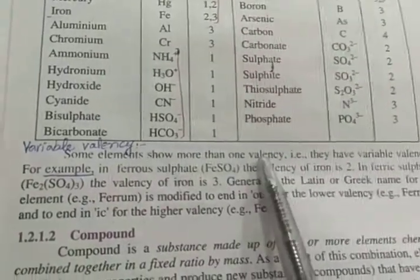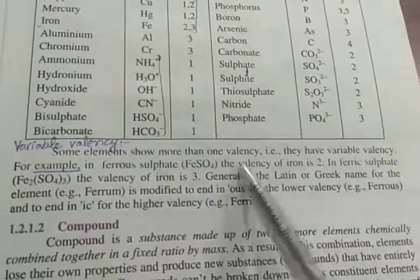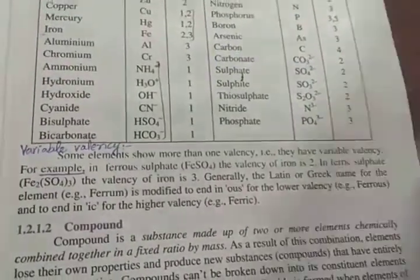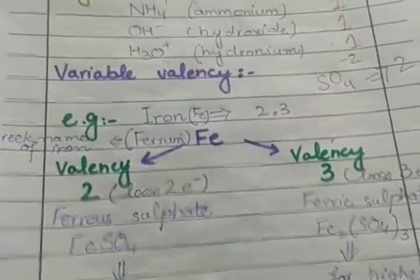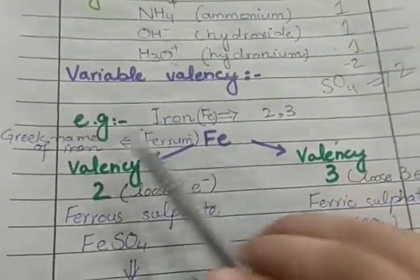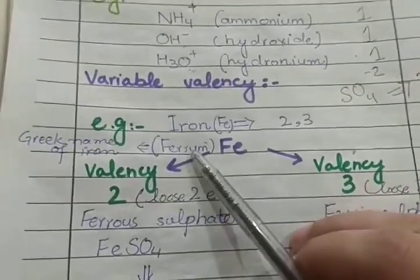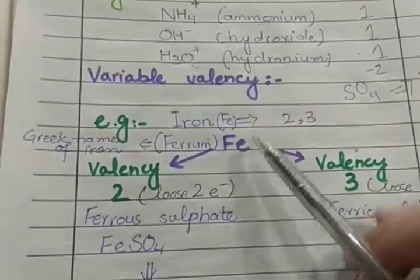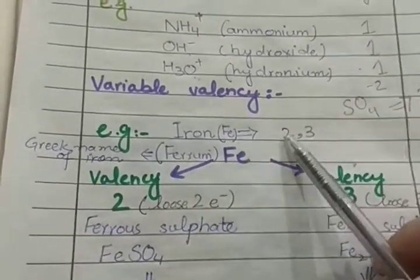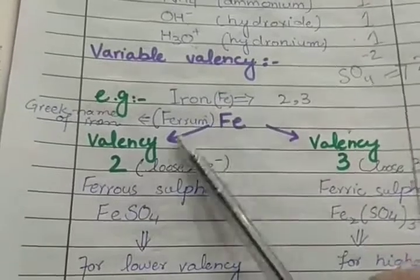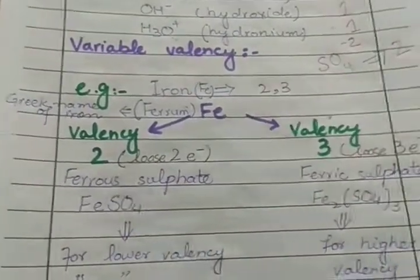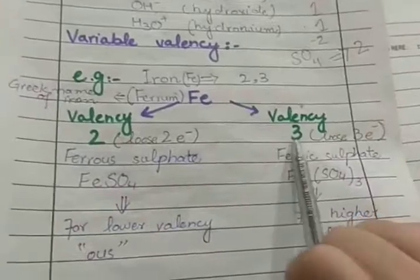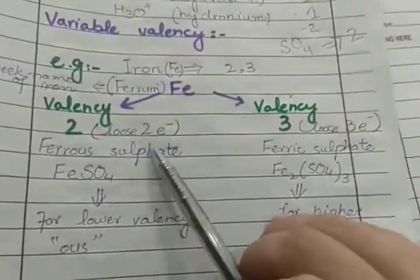Definition: Some elements show more than one valency. We say that they have variable valency. Here's an example to help you understand. Iron - its Greek name is Ferrum - we represent it with the symbol Fe. It shows two and three valency. Valency 2 is shown when iron atom will lose two electrons, and 3 is shown when it will lose three electrons.